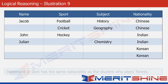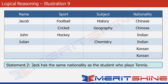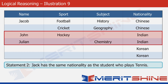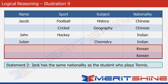Now let's go to statement two. It says that Jack has the same nationality as the student who plays tennis. Looking at the Chinese rows, tennis can't be placed there because both sports cells are already filled. Looking at the Indian rows, Jack can't be placed there since John and Julian have already occupied those two cells. So the only option left is the Korean rows — we can put Jack in one row and tennis in the other.